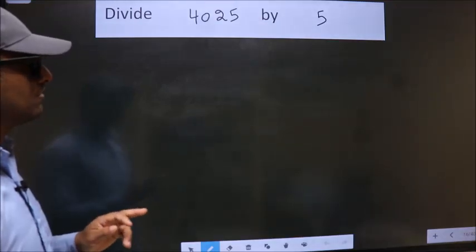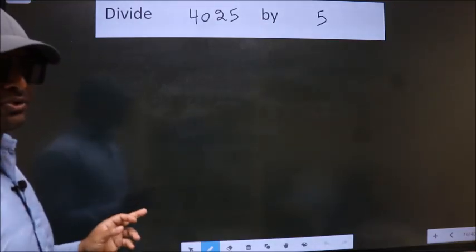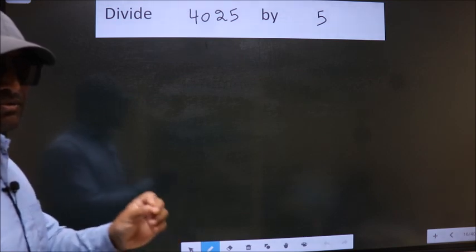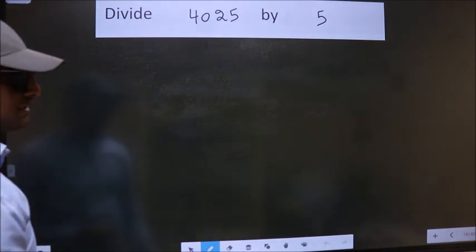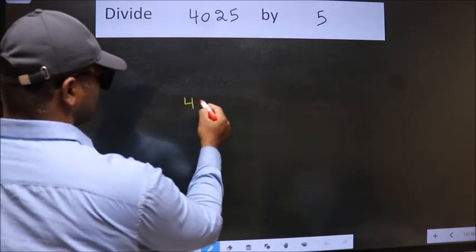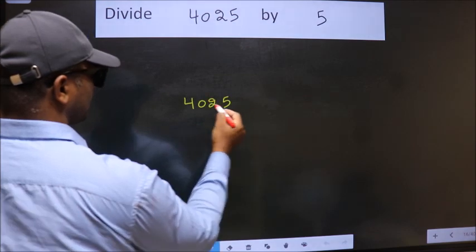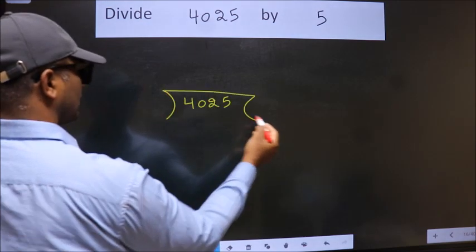Divide 4025 by 5. To do this division, we should frame it in this way. 4025 here, 5 here.